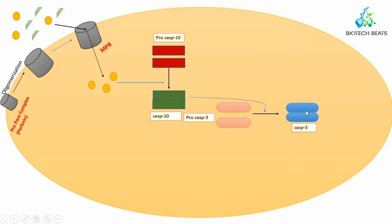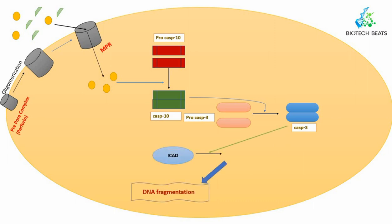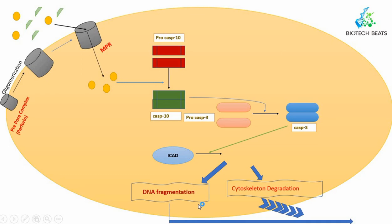Caspase-10 then leads to activation of procaspase-3, converting it to caspase-3. As discussed in the previous video, caspase-3 leads to apoptosis via two mechanisms: cytoskeleton disruption and DNA fragmentation. For DNA fragmentation, caspase-3 activates ICAD to form CAD, and CAD leads to DNA fragmentation. Both DNA fragmentation and cytoskeleton degradation ultimately result in apoptosis.